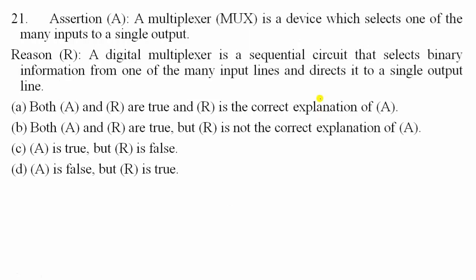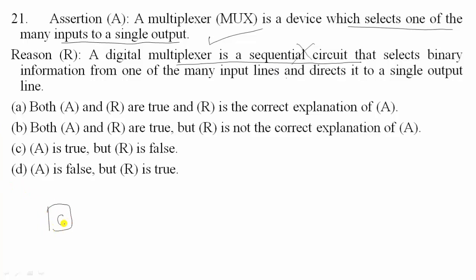Twenty-first question: assertion — a multiplexer selects one of many inputs to a single output based on select lines. This is true. Reason — a digital multiplexer is a sequential circuit. This is false; a multiplexer is a combinational circuit. Option C: assertion is correct and reasoning is false.